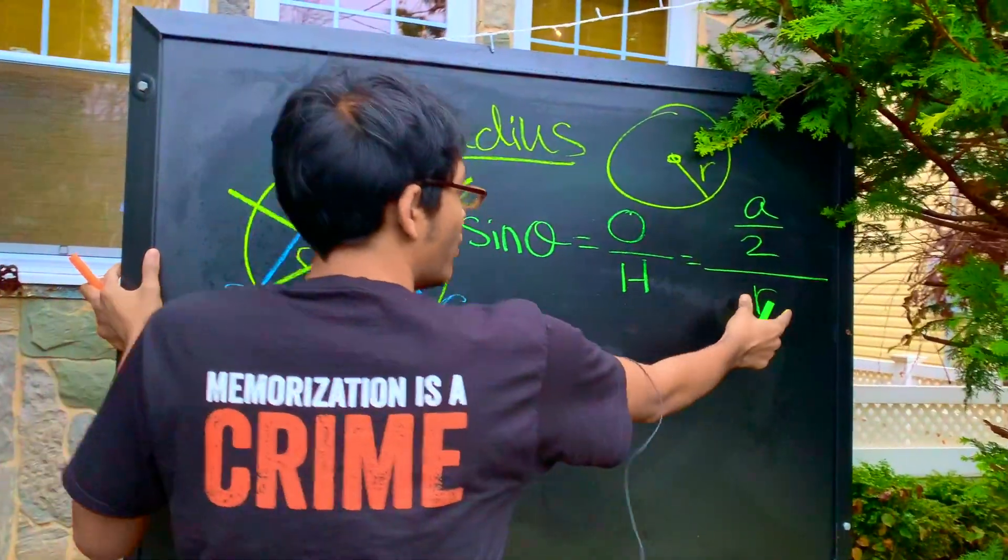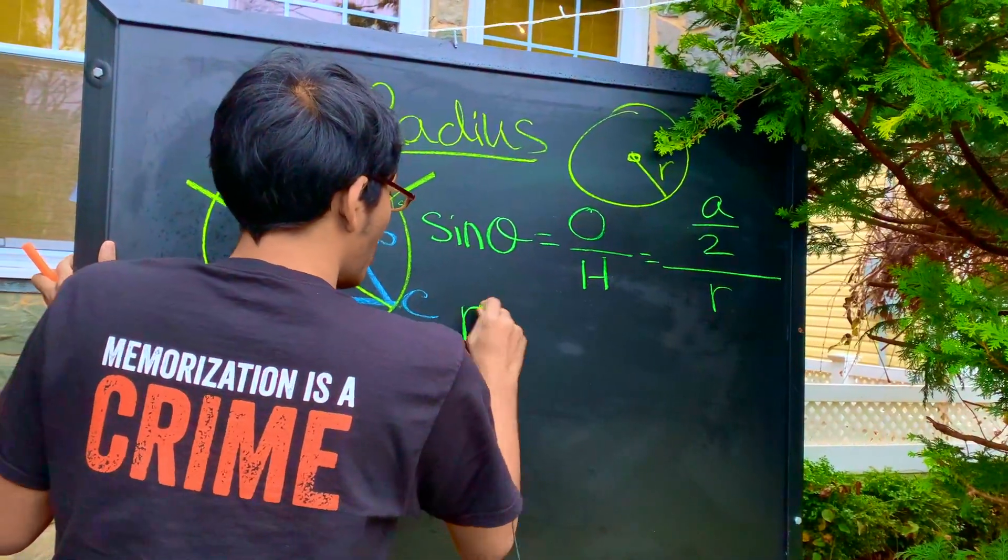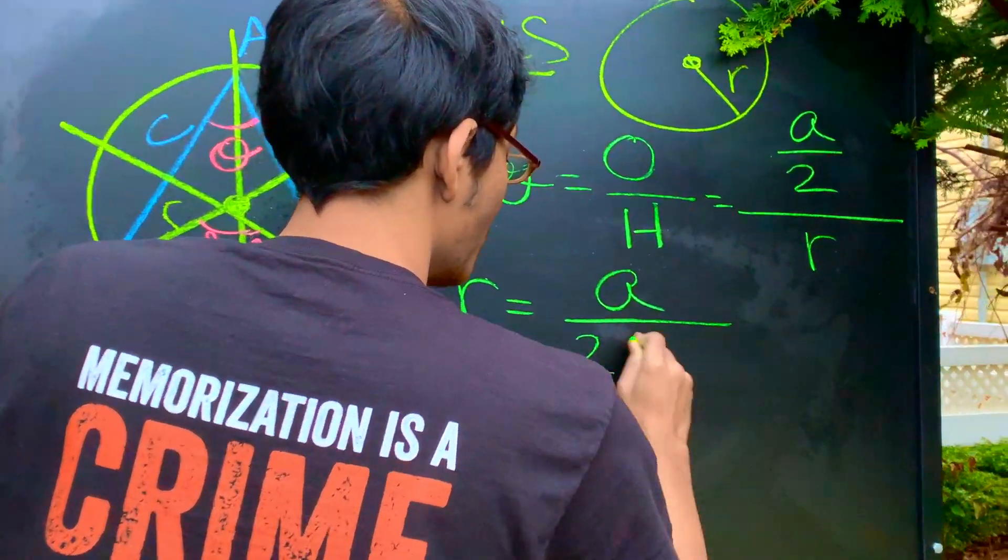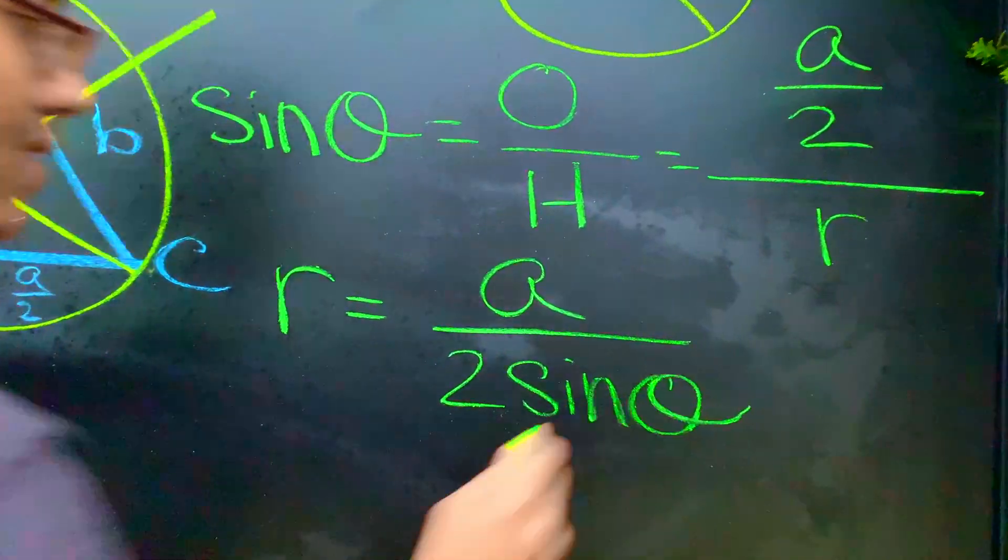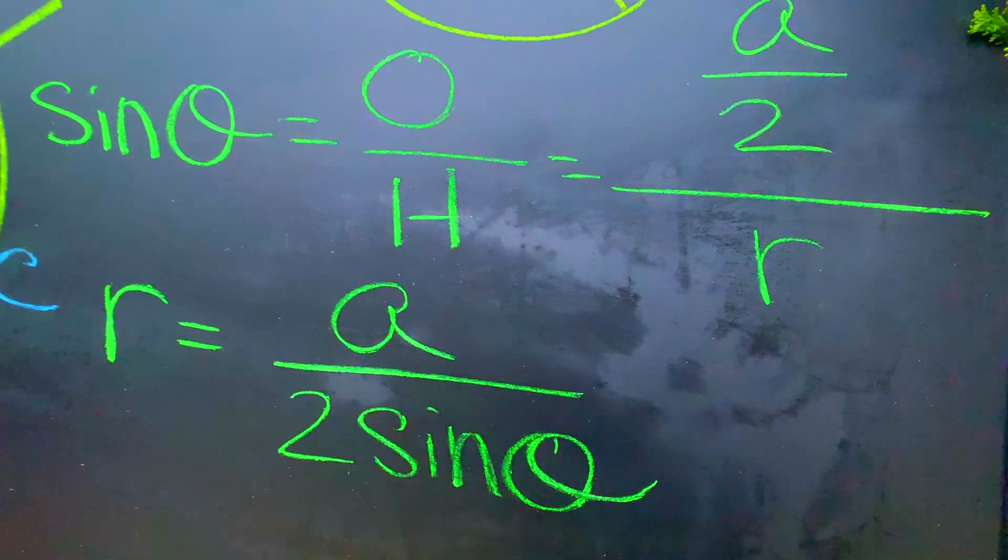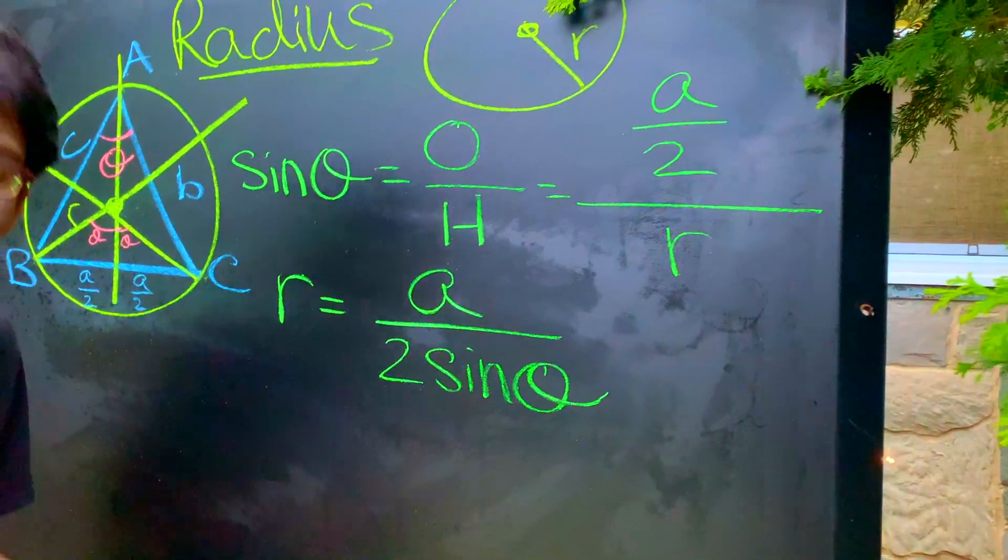And so, if we isolate r, what do we get? r is equal to a over two sine theta. Okay, so far so good. But we're not done. We can make this even nicer. Check it out.